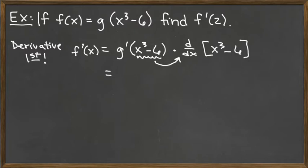So f prime of x is g prime of x cubed minus 6 times – now we can take the derivative of this polynomial. So we have the derivative of x cubed is 3x squared using the power rule. And the derivative of the constant 6 would just be 0, so we've completed our derivative there.